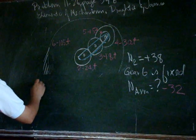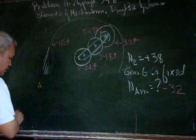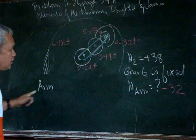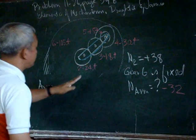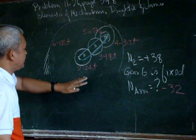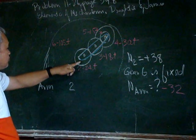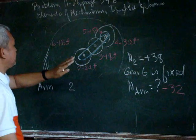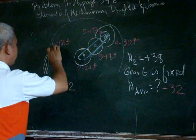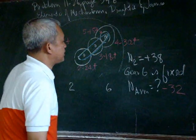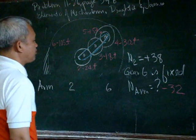So we have to have a column for the arm, a column for body 2 or gear 2, and then a column for 6, which is fixed. And 2 is plus right here.